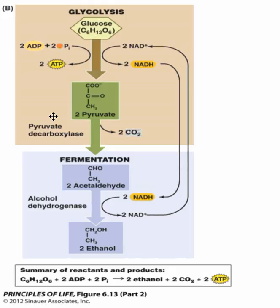Acetaldehyde is then reduced by NADH, which then becomes NAD+, so that goes back up to the top to be reduced once again when glycolysis occurs. Then with the presence of the dehydrogenase, the acetaldehyde turns into ethanol. That's fermentation — pretty straightforward. If you guys have any questions, be sure to ask.